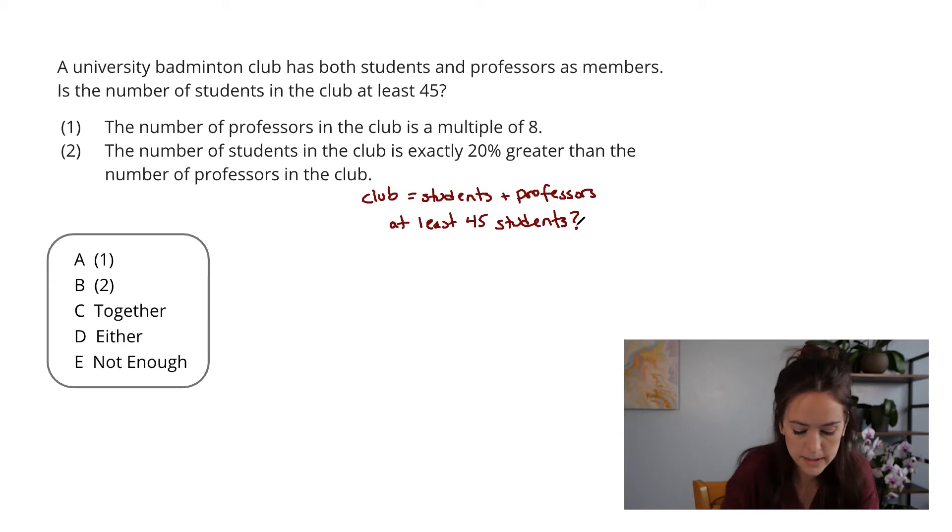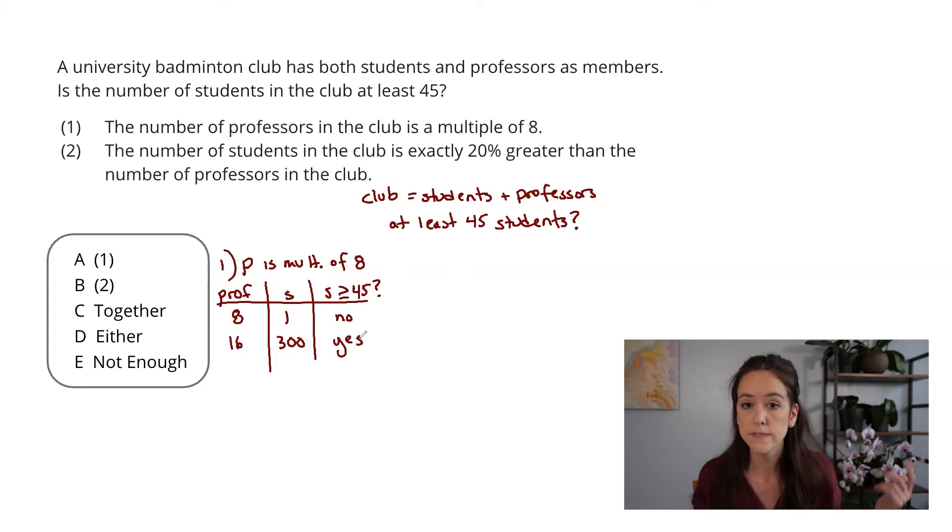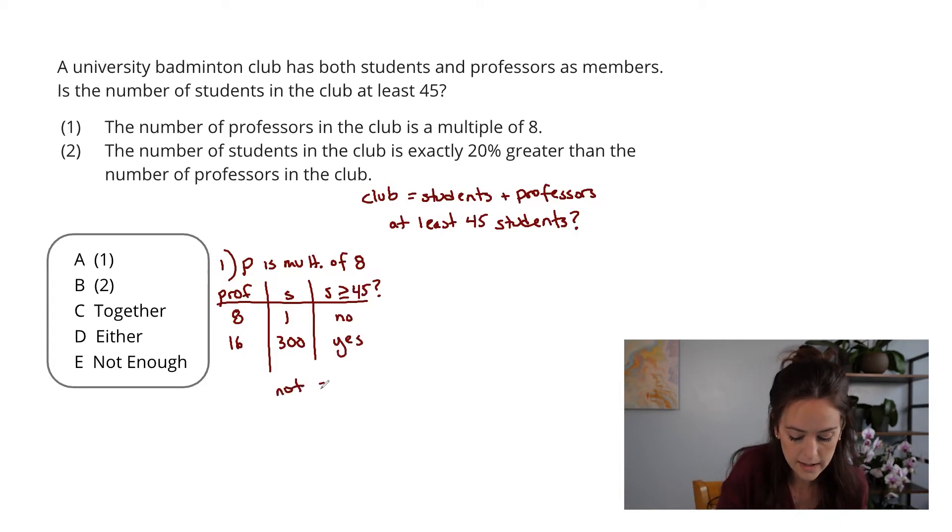Let's go ahead and jump into the first statement, which tells me that the number of professors is a multiple of eight. This seems pretty insufficient to me, but I am just going to really quickly try some numbers out. If I have, for example, eight professors, I ultimately want to know if I have at least 45 students. I could have, for example, one student, or I could have 16 professors and 300 students. In one case, no, in the other case, yes, that means this is insufficient. I can go ahead and eliminate answer choice A and answer choice D.